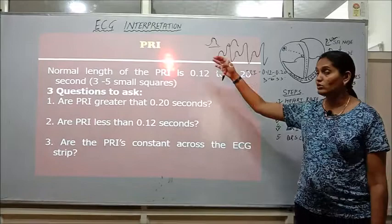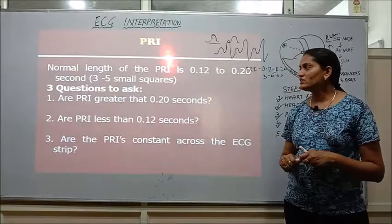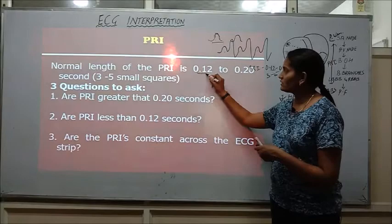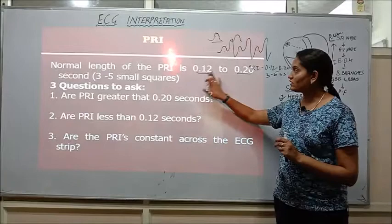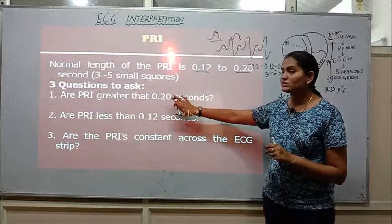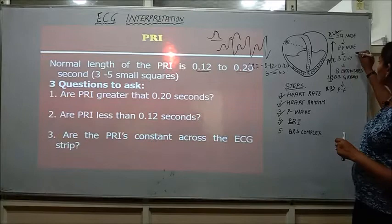These are: first, are the PR intervals greater than 0.20 seconds? We have said that 0.12 to 0.20 seconds is normal. So the question is whether they are more than this, or second question is whether they are less than this. So first, are they more than 0.20 seconds? What does that mean? This interval coming out to be more than 0.20 seconds.